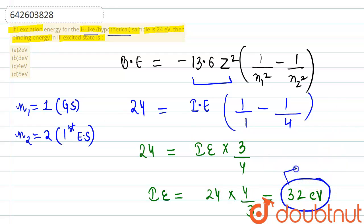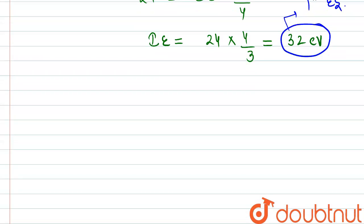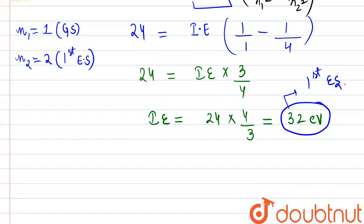Now we need to remember that this ionization energy is basically for the first excited state, but what the question is asking us, we have to tell the binding energy in the third excited state. Clear? So in order to give that third excited state here we need to consider the rest of the values.